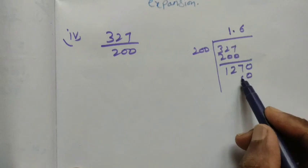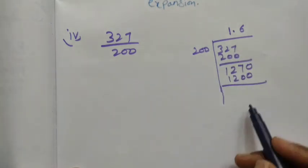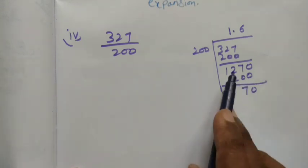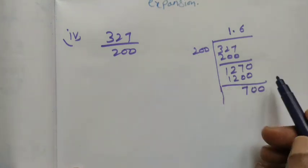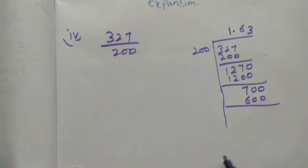6 times 0 is 0. 6 times 2 is 12. We continue the division process... right?